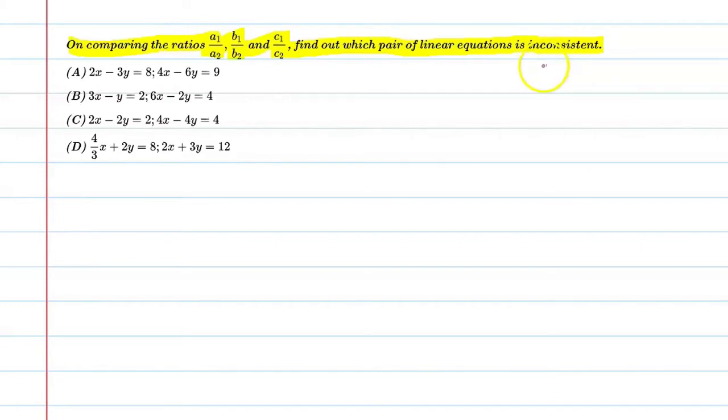Moreover, if we talk about the condition which helps us say that a given equation is inconsistent, so A1 upon A2 is equal to B1 upon B2, but it is not equal to C1 upon C2. So if some linear equation can satisfy this condition, then we say that the given system of equations is inconsistent.